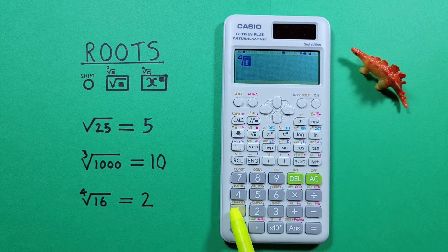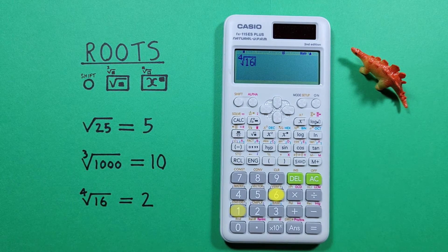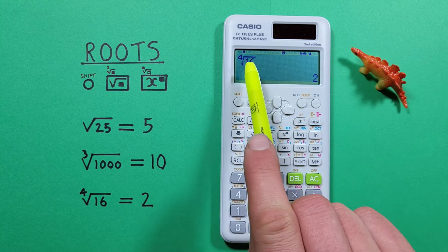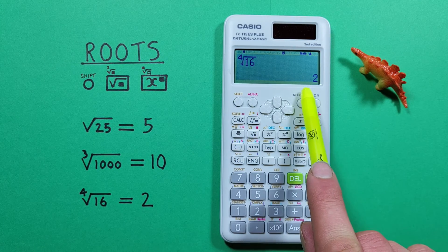Here we enter 16, press equals, and get a result of 2—the fourth root of 16 equals 2.